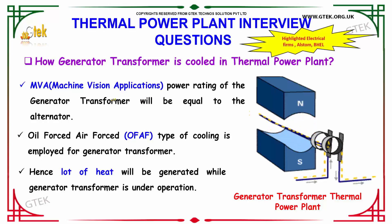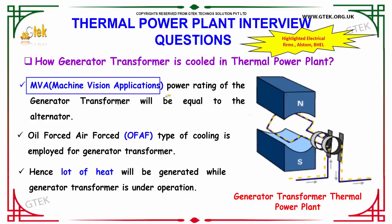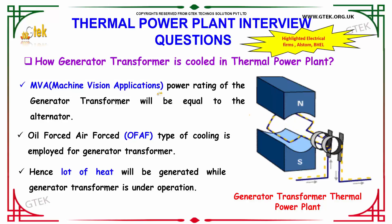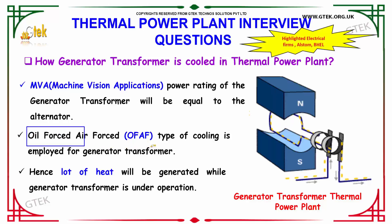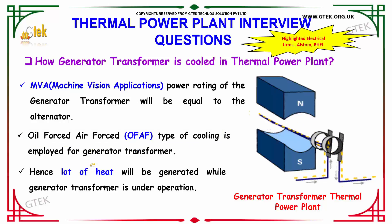How is the generator transformer cooled in the thermal power plant? The MVA power rating of the generator transformer will be equal to the alternator. The main cooling method employed is oil-forced, air-forced type of cooling. This type of cooling is employed for the generator transformer, as a lot of heat is generated while the generator transformer is under operation.